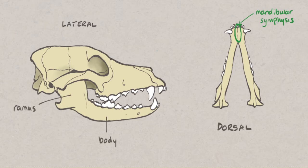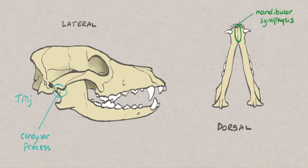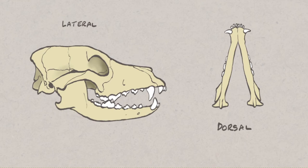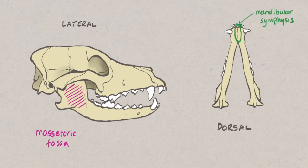The body contains the sockets, or alveoli, for the teeth of the lower jaw. The condylar process of the ramus articulates with the rest of the skull, forming the temporomandibular joint. The mandible is a site for attachment of masticatory muscles involved in chewing. The masseter inserts on the masseteric fossa and the temporalis inserts on the coronoid process.